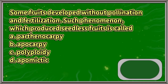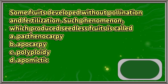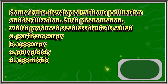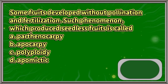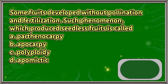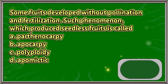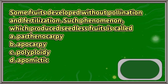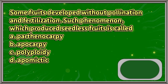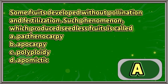Some fruits developed without pollination and fertilization. Such phenomenon which produced seedless fruits is called: A. Parthenocarpy. B. Apocarpy. C. Polyploidy. D. Apomyctic. The answer is letter A.